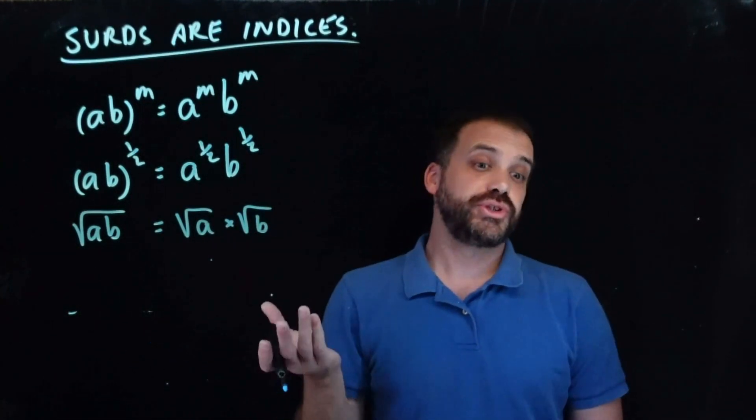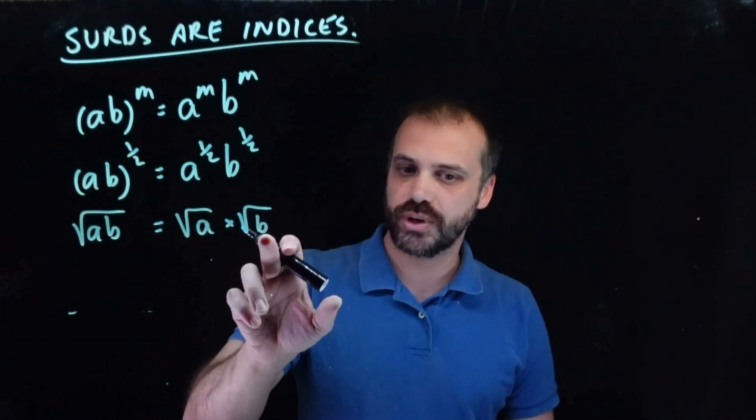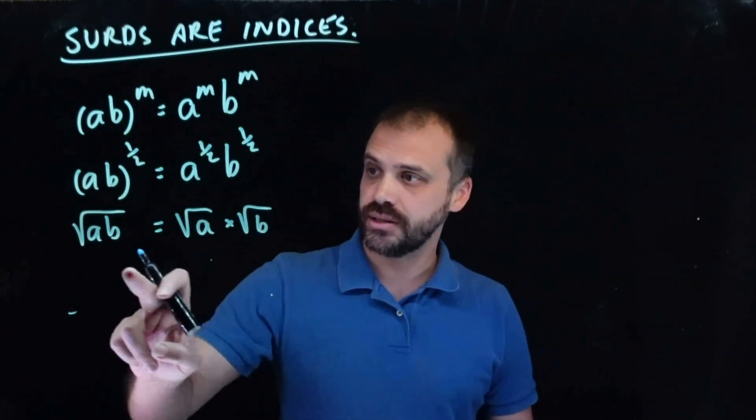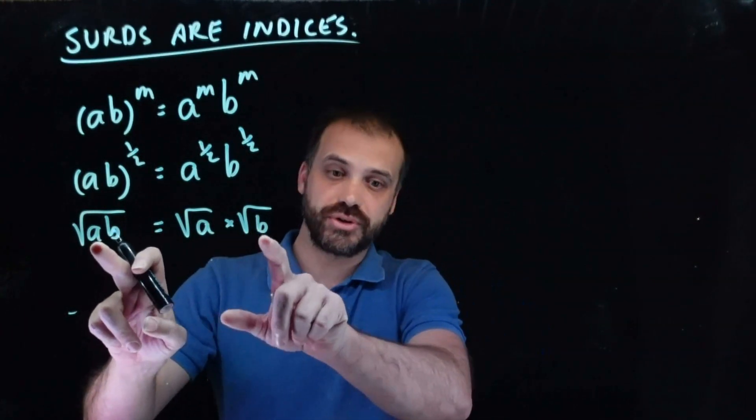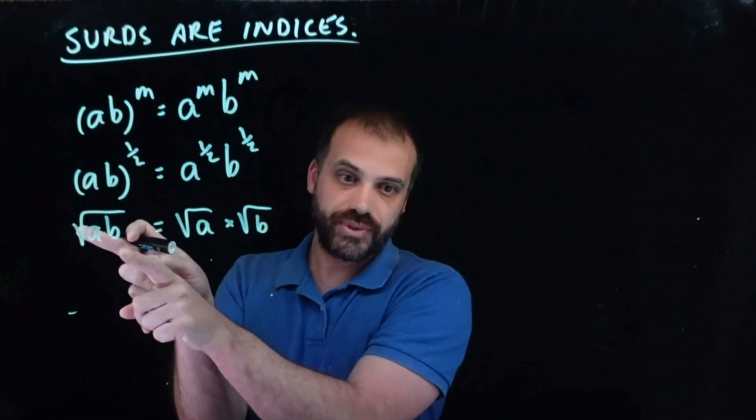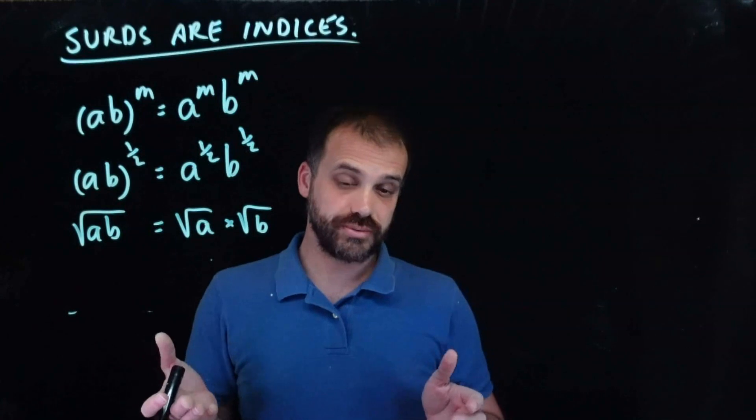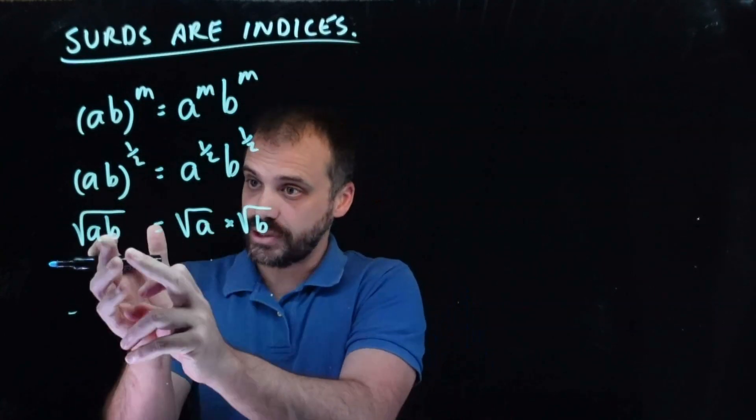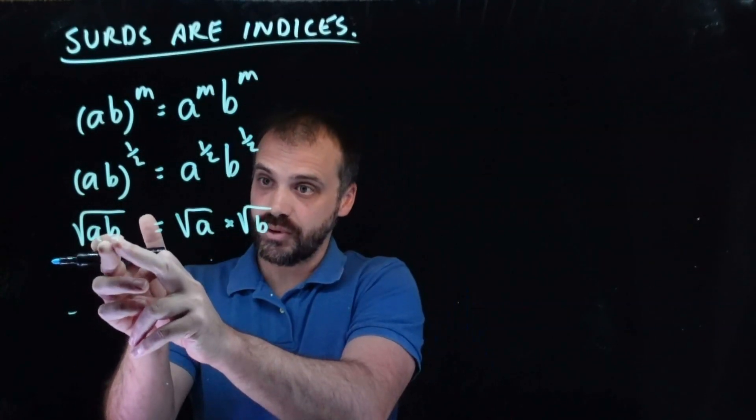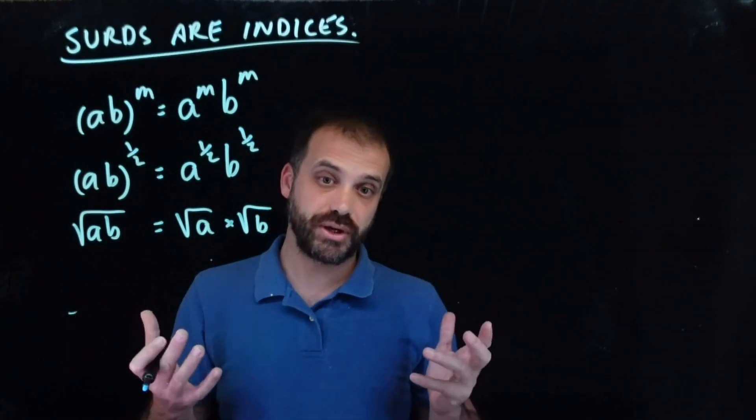That's the rule we were just following. If we've got a square root and we multiply it by another square root, the answer will be the thing in the first square root times the thing in the second square root. We were just using this rule in that direction. It's also the same rule we've been using to simplify things. We've been taking a number, breaking it into a and b, one of which is a square number, and then we go from there.